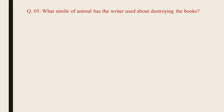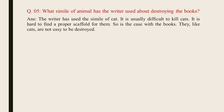Question number 5: What simile of animal has the writer used about destroying the books? The answer is, the writer has used the simile of a cat. It is usually difficult to kill cats, and it is hard to find a proper scaffold for them. So is the case with the books — they, like cats, are not easy to be destroyed.